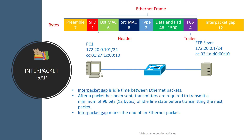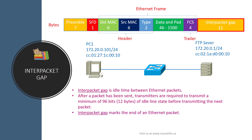After the FCS is the inter-packet gap. The inter-packet gap is idle time between Ethernet packets. After a packet has been sent, transmitters are required to transmit a minimum of 96 bits, or 12 bytes, of idle line state before transmitting the next packet. The inter-packet gap marks the end of an Ethernet packet.